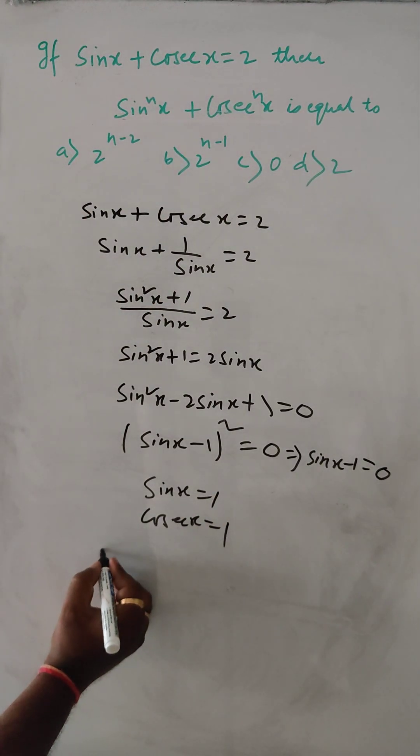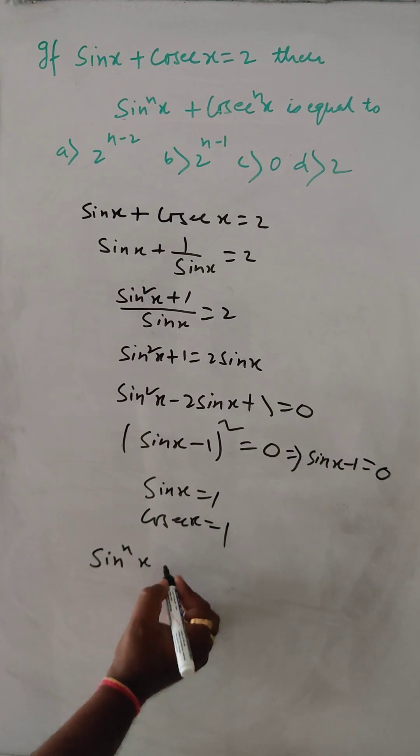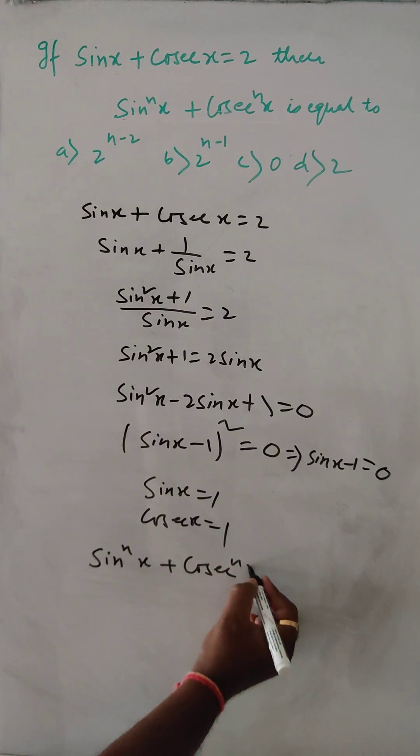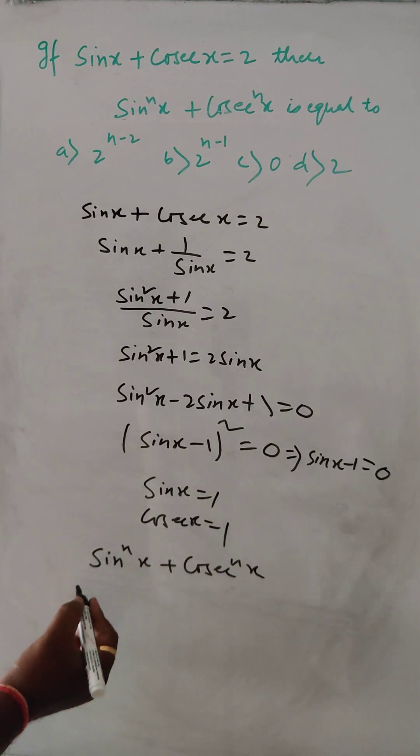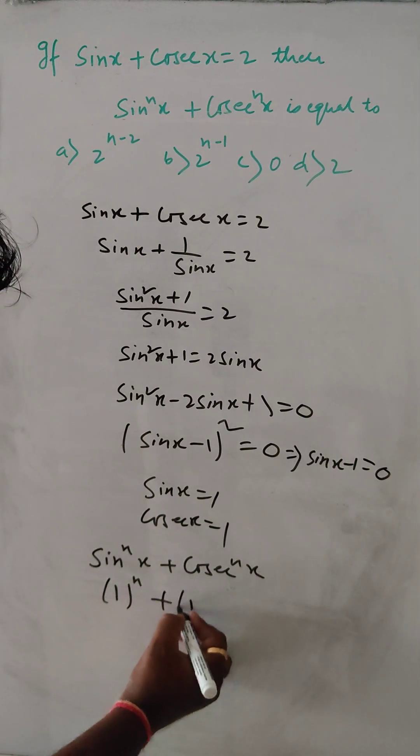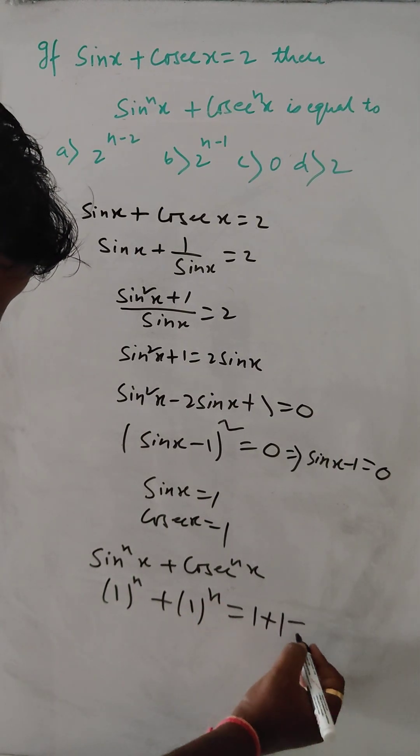So here we have to find sin to the power n x plus cosec to the power n x. So here 1 to the power n plus 1 to the power n is equal to 1 plus 1 equals 2.